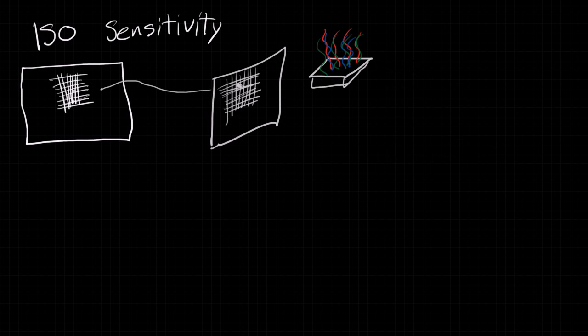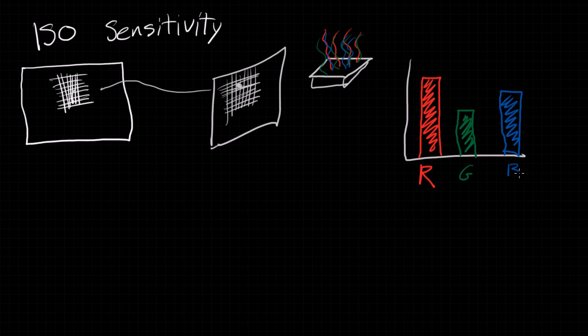First it looks at how much red is coming in - maybe this much. Then it sees how much green is coming in - maybe this much. And finally how much blue is coming in. These three colors together combine to make up a single color for this pixel, and that's what gets recorded.